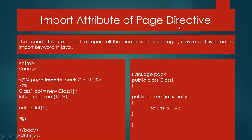We discuss the import attribute of the page directive. The import attribute is used to import all the members of a package, class, etc. It is the same as the import keyword in Java. In this example, the page directive uses the import attribute passing the value as pack.class1. A class named class1 is created with a method 'sum' that has return type int, passing two arguments x and y, and returning the addition of x plus y.